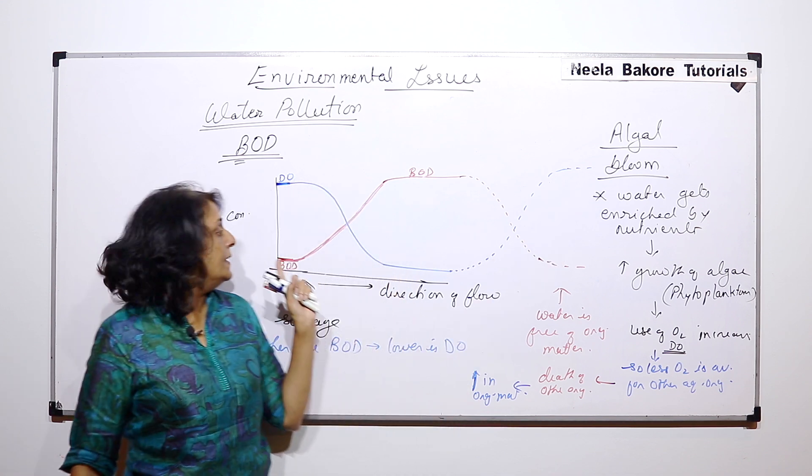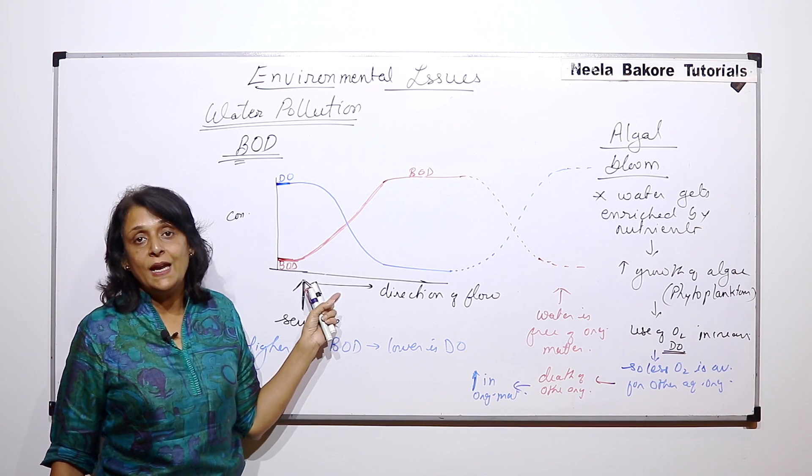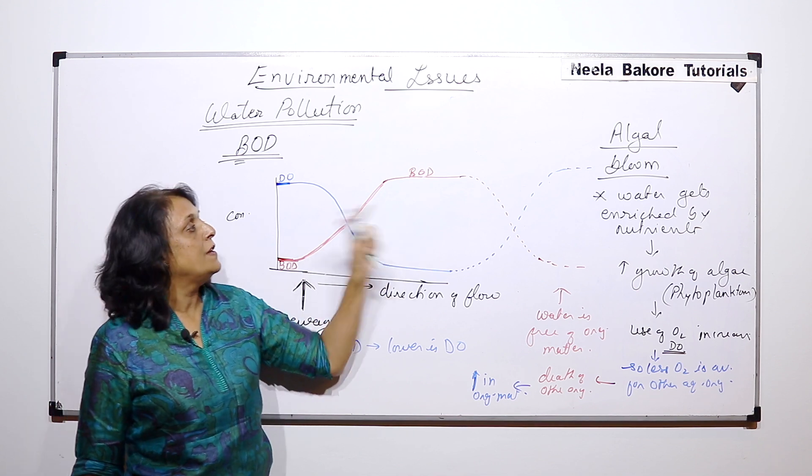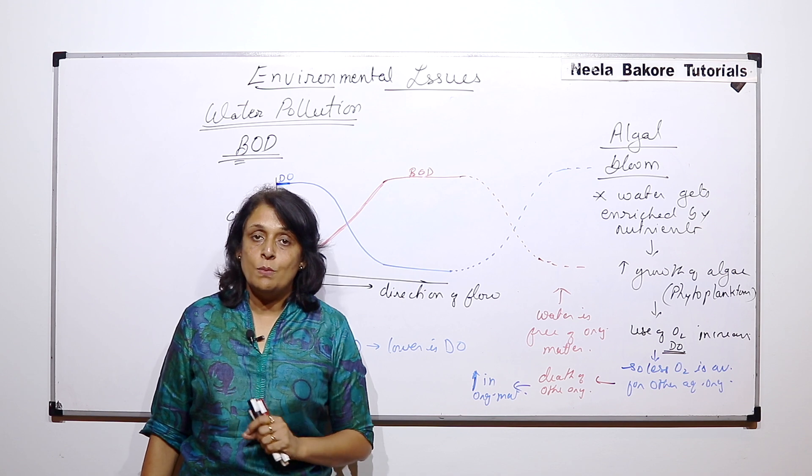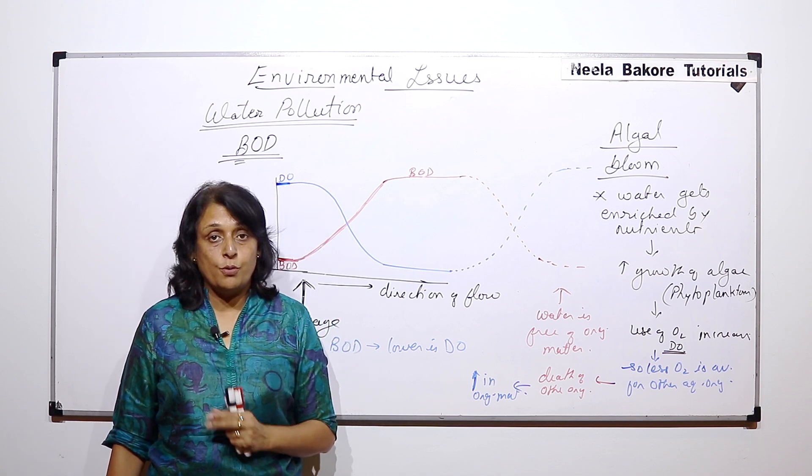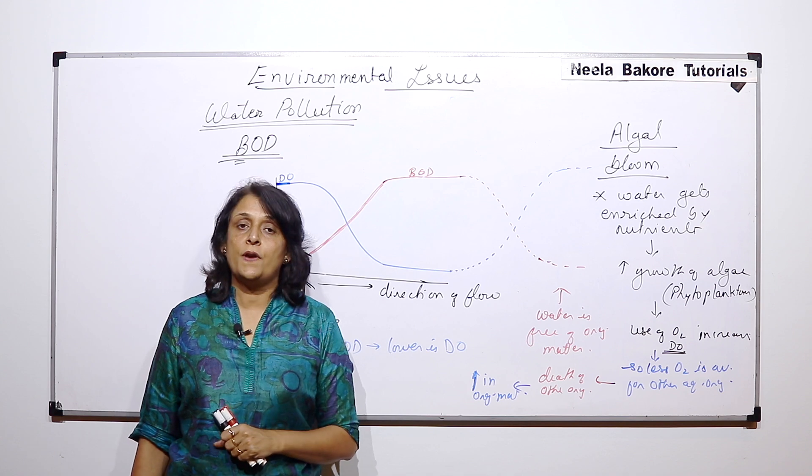We have seen the relationship between BOD and dissolved oxygen, and we have also talked about algal bloom. In the next part, we will talk about eutrophication and biomagnification.